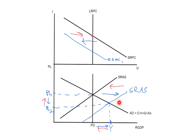However, when there's a change in aggregate supply, there is a change in the Phillips curve in the opposite direction.